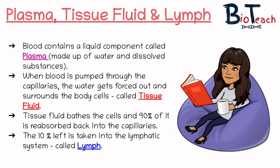Tissue fluid will bathe those cells, and around 90% is reabsorbed back into the capillaries. The 10% that's left is taken into the lymphatic system and is known as lymph. Basically, plasma, tissue fluid, and lymph are all related to each other but have different names because they have different amounts of components such as water, digested food, oxygen, and waste products.